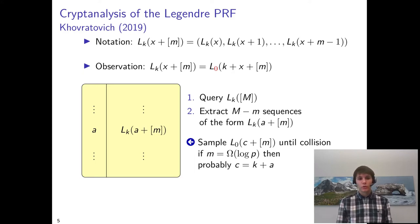And then in the second step, we sample Legendre sequences with offsets c, randomly, until we find a collision with something in the table.